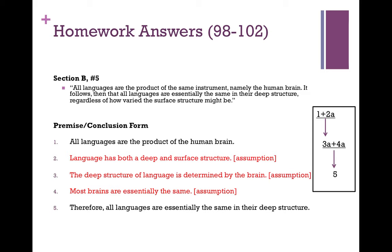This argument is kind of perplexing. The assumption it's making — number four, most brains are essentially the same — I'm not really sure that's warranted at all. I'm also very curious about the claim that deep structures would all be the same. Why wouldn't the surface structures also be the same? There seem to be some unwarranted assumptions going on here. But in any event, we're not here to criticize, we're just here to understand. I think this is a representative example of how you would diagram this argument.